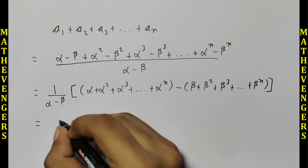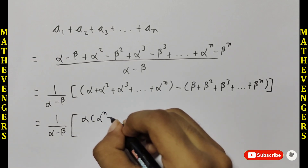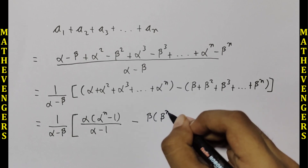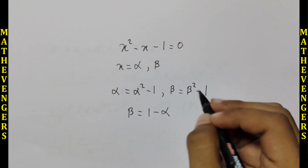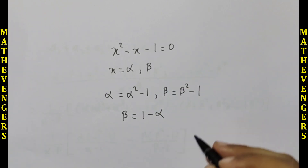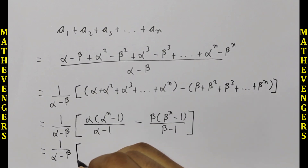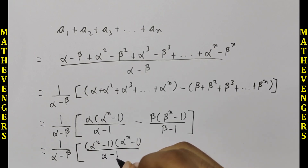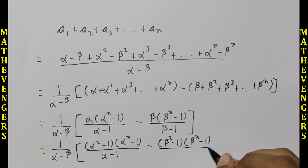We can see that these two forms are geometric progressions. Applying the GP sum formula, and using the identities alpha = alpha² - 1 and beta = beta² - 1, we substitute the common ratios. This gives us an expression involving (alpha² - 1)(alphaⁿ⁻¹ - 1)/(alpha - 1) and the corresponding beta terms.